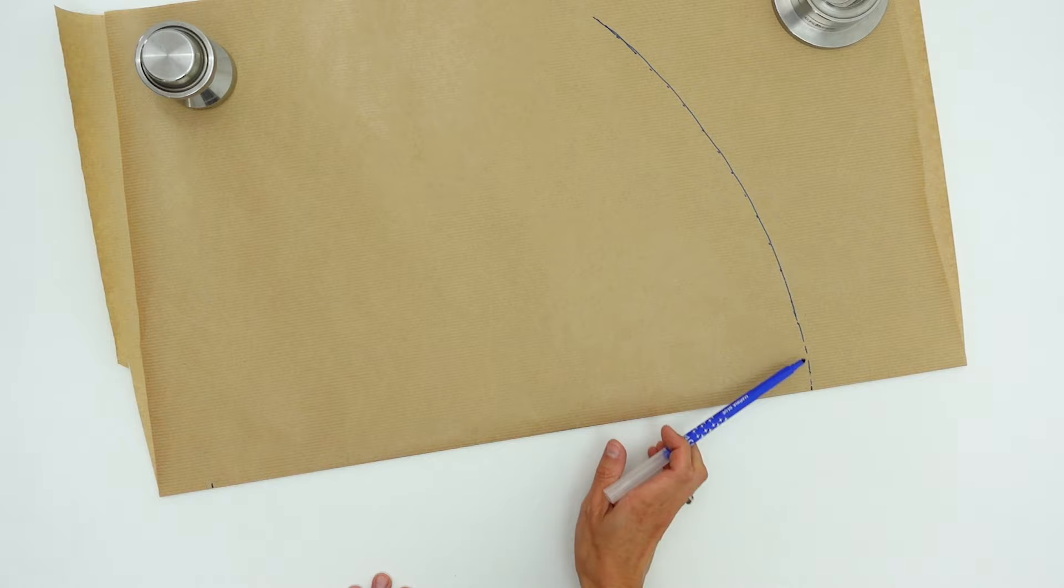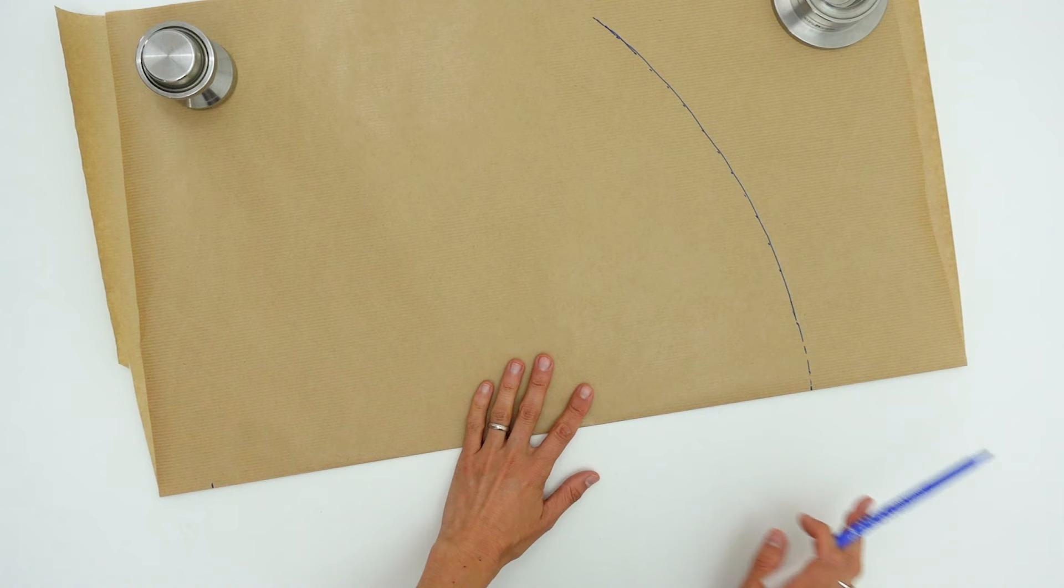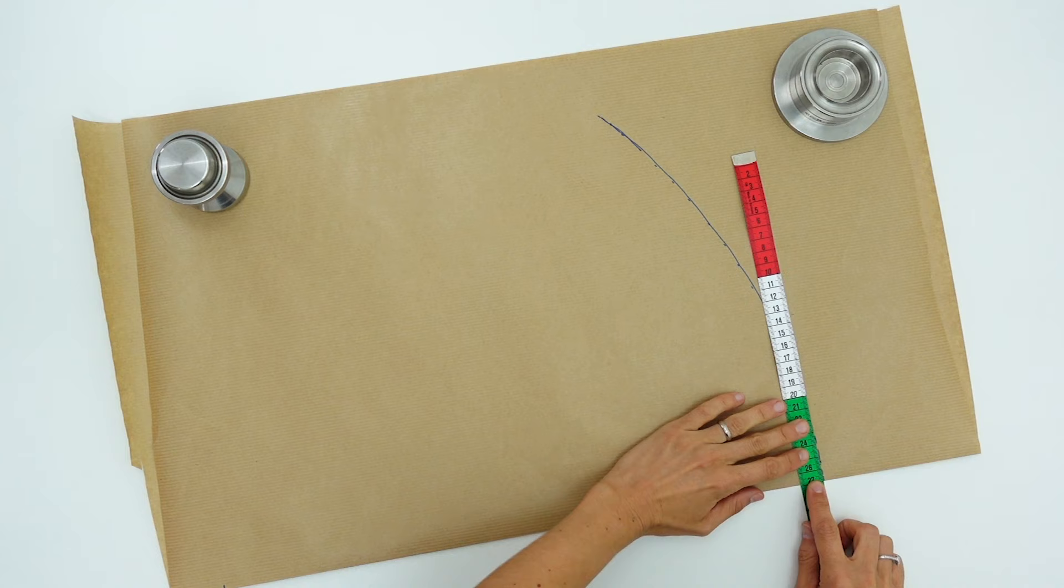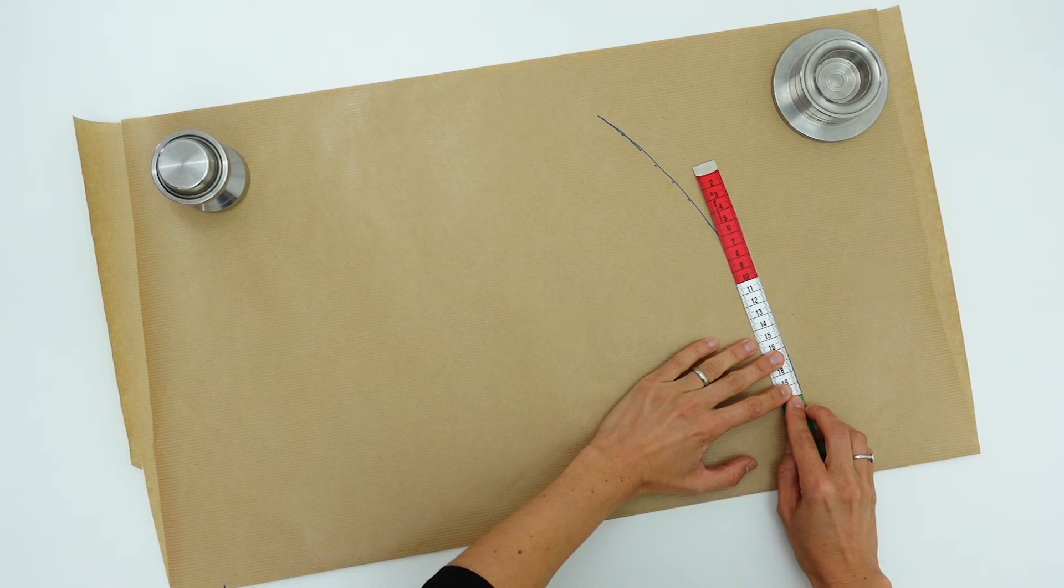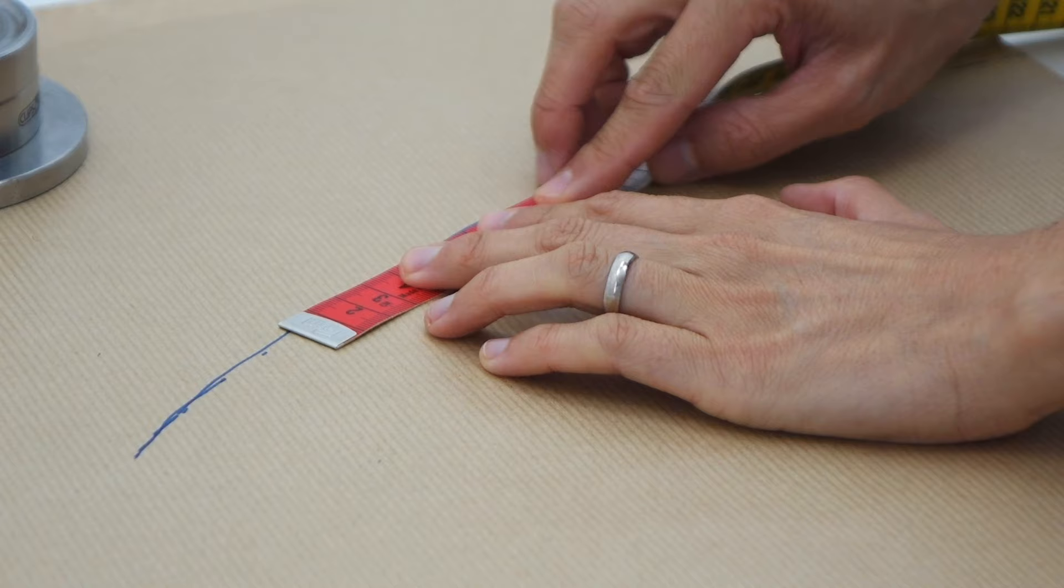Why not the full circumference you might ask? Because we already folded our pattern paper in half. My hat size is 54 divided by 2, I have 27.